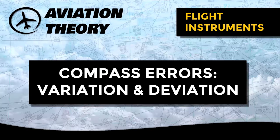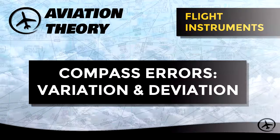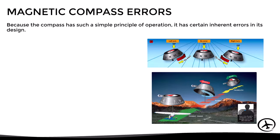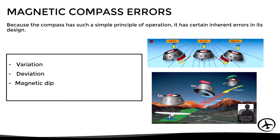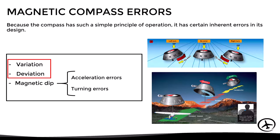Today we will talk about the magnetic compass errors, specifically in this video about magnetic variation and deviation. The magnetic compass is basically a magnet that is free to rotate about a pivot point, and therefore since it has such a simple design, it has certain inherent errors that pilots should be aware of. These errors are magnetic variation, compass deviation, and magnetic dip, which in turn is divided into acceleration error and turning error.